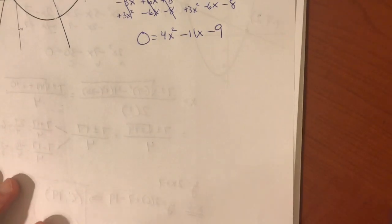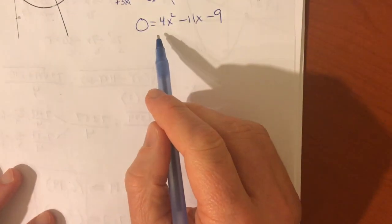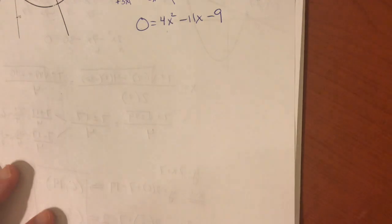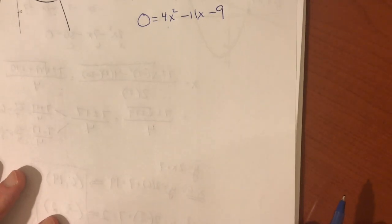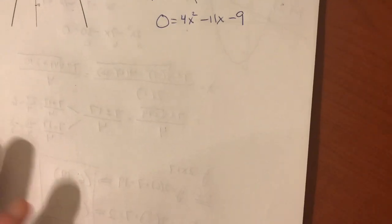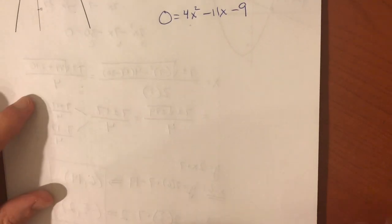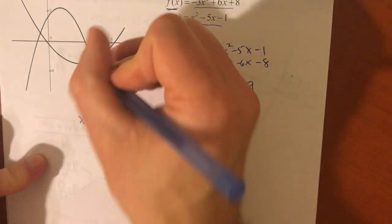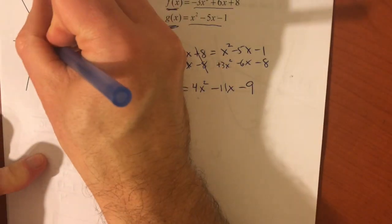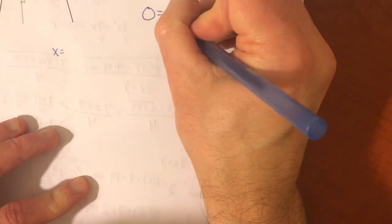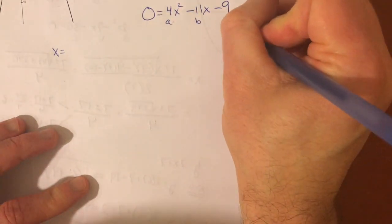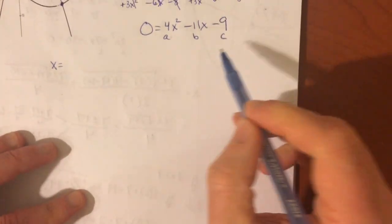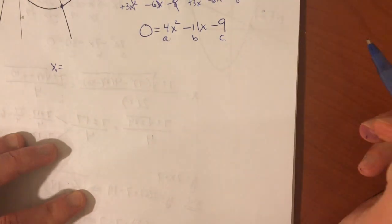And, collect all those like terms on this side. That will be 4x squared minus 11x minus 9. And, you could try to factor that if you like. But, you probably won't be able to do it at this point because it's got 4 in front of that x squared. There's no GCF. So, let's just use the quadratic formula. That's what's great about it. It works for any quadratic.